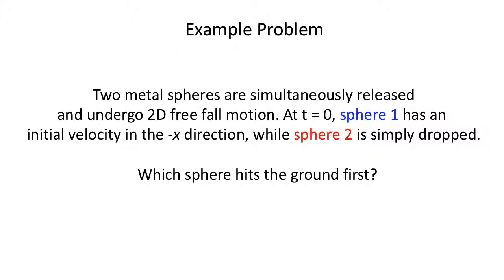Let's do an example problem. This is a really typical exam problem — there's very little information, but there's clearly a story. Two nanospheres are simultaneously released and undergo free fall. Sphere one has an initial velocity in the negative x direction; sphere two is just dropped. The question is: which one hits the ground first? The choices are: sphere one, sphere two, both at the same time, or not enough information.